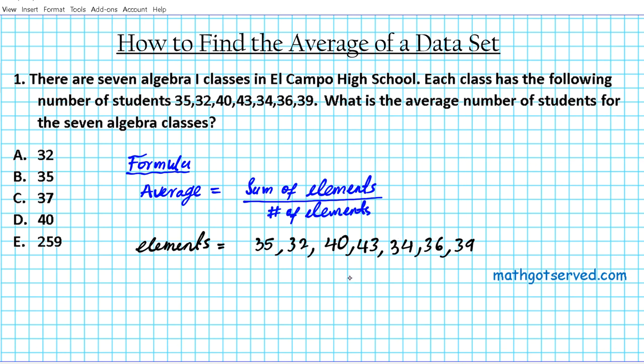All right, so these are the elements that we have, so we just need to find the sum of the elements and the number of elements. The number of elements in the data set is basically how many numbers we have here. We count them all, we'll find out that we have a total of seven numbers, and it's also indicated in the problem that there are seven algebra one classes. So sometimes you can refer to the problem to determine the number of elements in your data set.